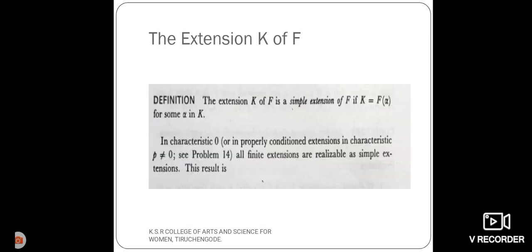Next one, the extension K of the field F. Let K be the extension field over the field F. It is said to be a simple extension of F. The condition is K equals F of E for some alpha belongs to the extension field K.